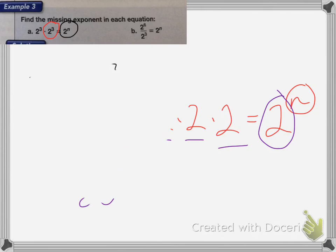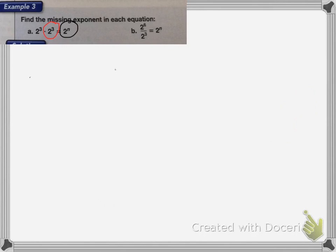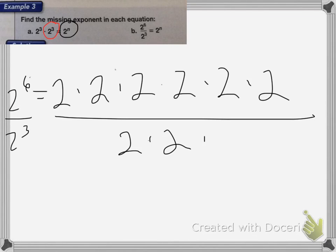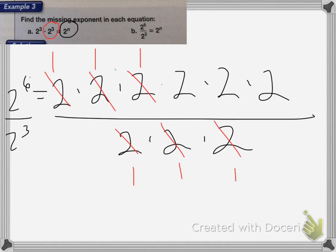On the next one, 2 to the 6th power divided by 2 to the 3rd power equals 2 to the n. 2 to the 6th power is 2 times 2 times 2 times 2 times 2 times 2, divided by 2 to the 3rd power, which is 2 times 2 times 2. If I have the same number on top and bottom, I can cancel. Three pairs of 2s cancel and become 1. I'm left with 2 times 2 times 2 over 1, so counting: 1, 2, 3 — the answer is 2 to the 3rd power.